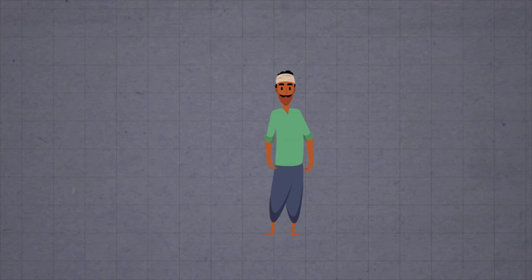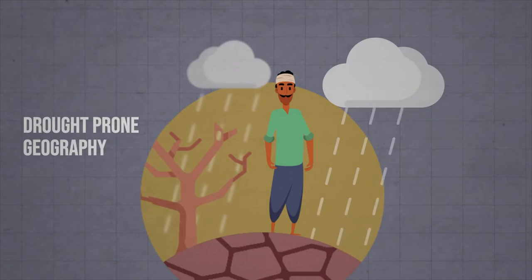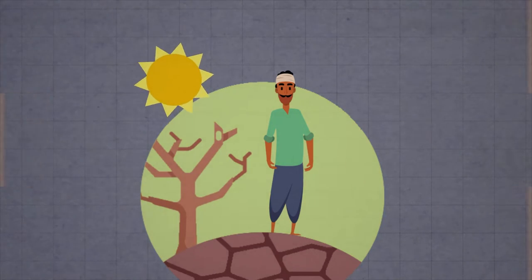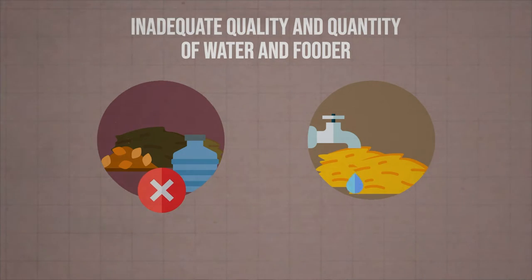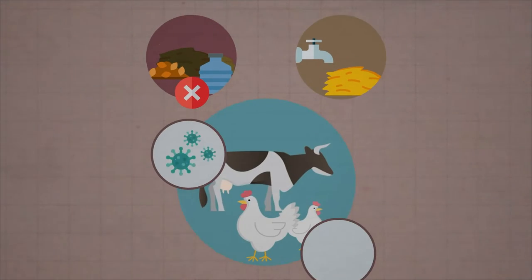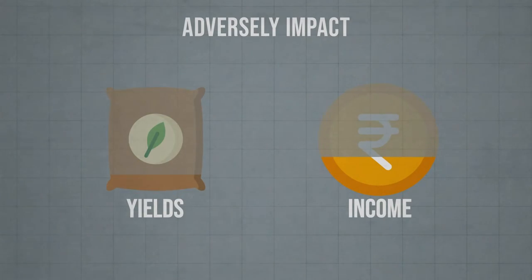Most of these livestock keepers also lie in drought-prone geographies with unpredictable rainfall and heatwave incidences. Inadequate quality and quantity of water and fodder affect livestock health and productivity and adversely impact yields and income for farmers.